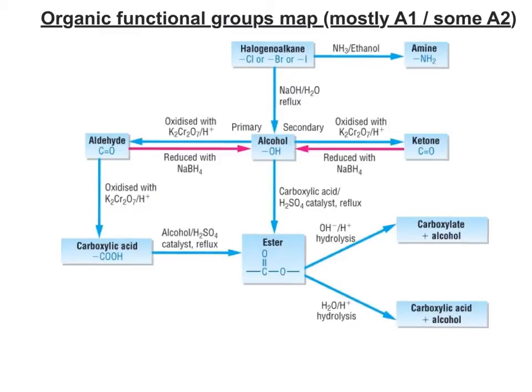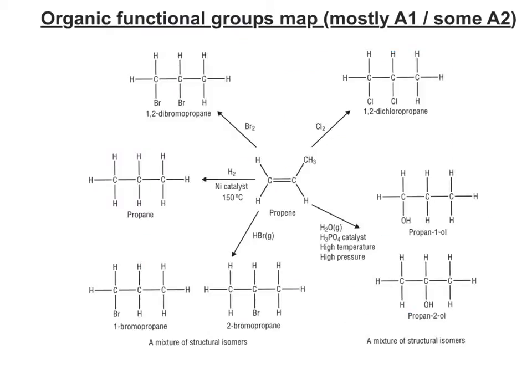Not forgetting the alkenes — these also have their own set of reactions that can be interlinked with that previous reactions map. So now let's have a look at some of the techniques we use to interchange between these functional groups.